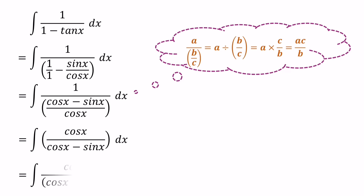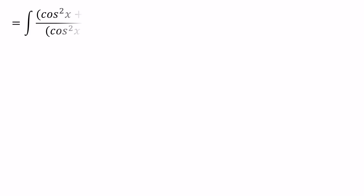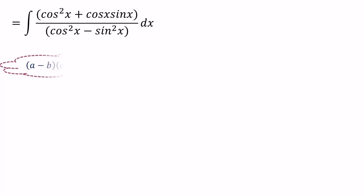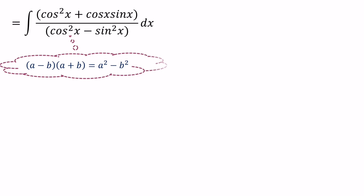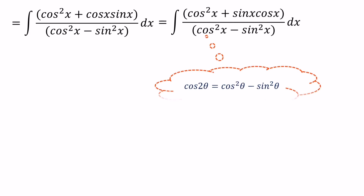Now we can multiply both numerator and denominator by the conjugate of the denominator, which is cos x plus sin x. In the numerator we get cos x into cos x plus sin x, which expands to cos squared x plus cos x sin x. In the denominator, cos x minus sin x into cos x plus sin x is of the form a minus b into a plus b, which equals a squared minus b squared. So the denominator becomes cos squared x minus sin squared x, which equals cos 2x by the double angle formula.